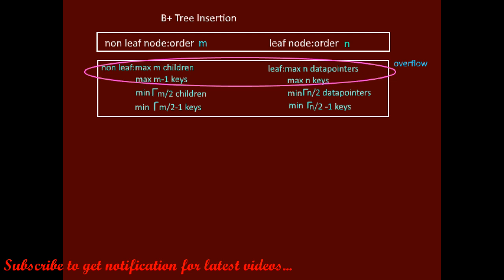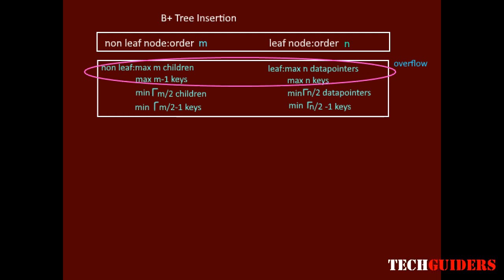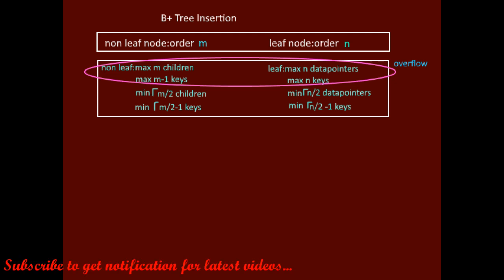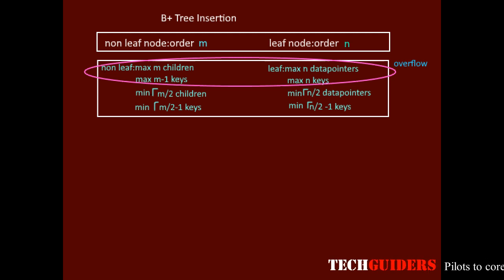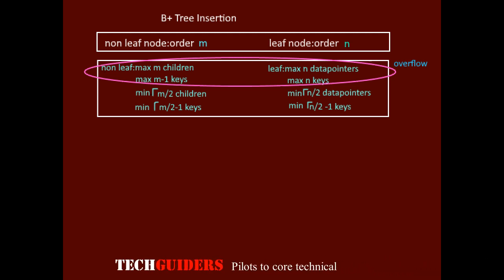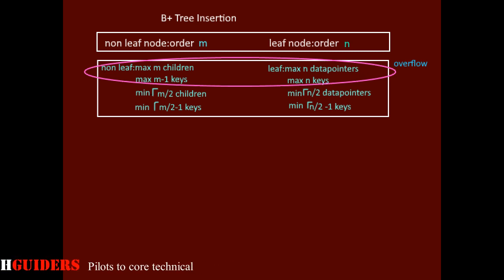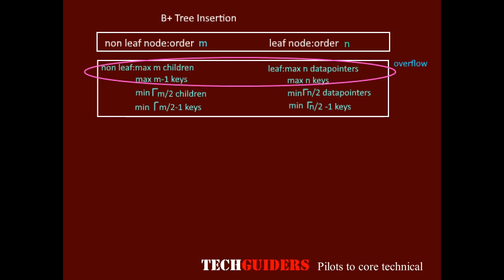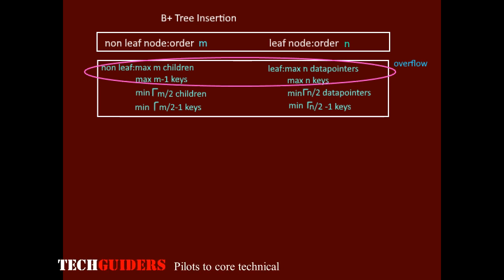In a B+ tree, new elements are always inserted into the leaf node. If this leads to an overflow on the leaf node, such nodes will be split and the tree will be restructured. If the restructuring leads to an overflow on some upper-level node, those nodes should also be split and the tree restructured again. This propagation continues up to the root node if required, until the tree is restructured according to the rules of the B+ tree.